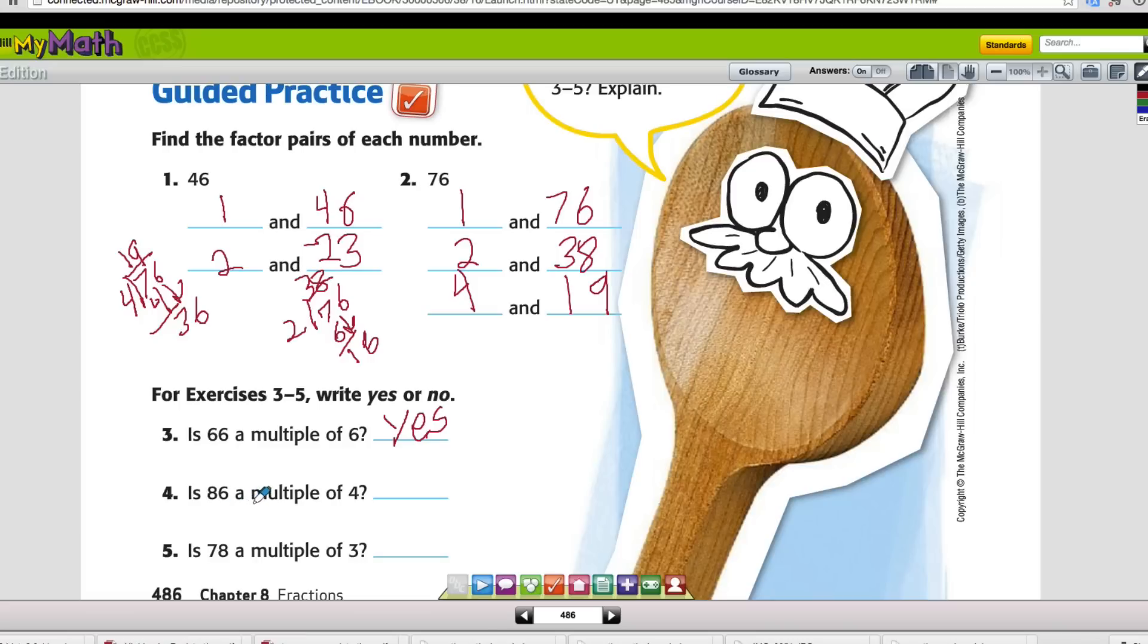Is 86 a multiple of 4? We can check that out using division. We'll do 4 divided into 86. 4 goes into 8 two times. 2 times 4 is 8. So that's looking good, except when we bring down our 6, is 4 going to go into 6 evenly? No, it only goes one time. And when we subtract, we end up with a remainder of 2. So 86 is not a multiple of 4.